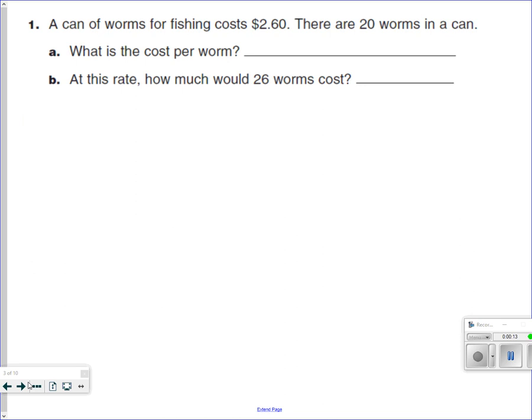So let's take a look at this first problem here. A can of worms for fishing costs $2.60. So I'm going to draw a little picture, that always helps. So the can itself is $2.60. There's 20 worms inside this can. What is the cost per worm? So that one's pretty easy. So you're going to take $2.60, you're going to take the price and you're going to divide it by 20.